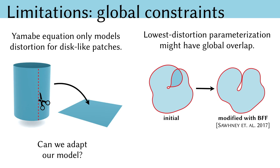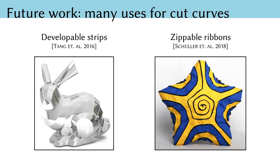A more practical question is that of global overlap. The lowest distortion parameterization of a cut surface might overlap itself in the plane. Our method is oblivious to this because we never actually compute a flattening. Recent parameterization tools allow the user to modify such patches to avoid global overlap, but it would be advantageous to incorporate this as a constraint in our optimization. We could also imagine integrating this flow into other problems where curves decompose a surface, like developable strip modeling or these zippable ribbons.